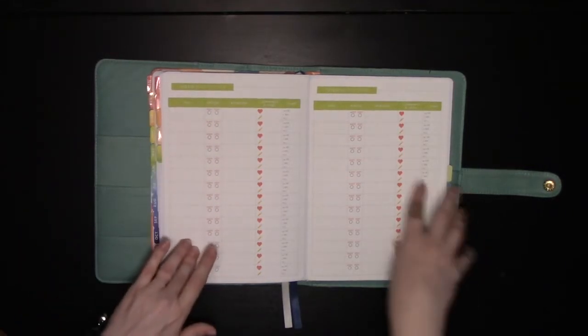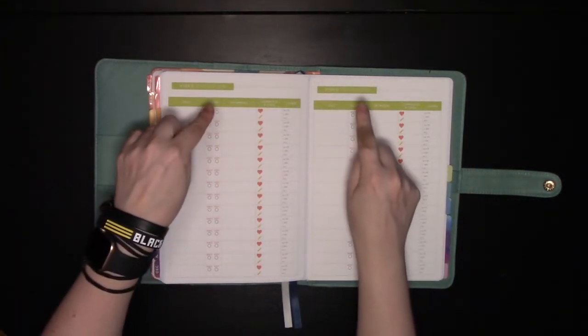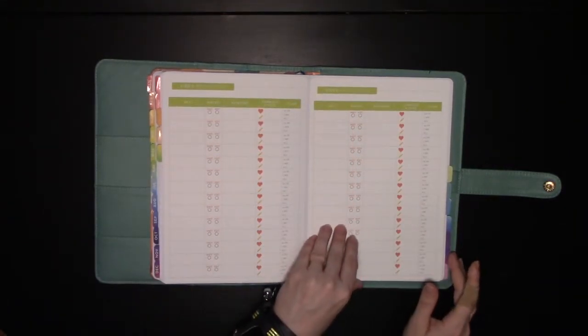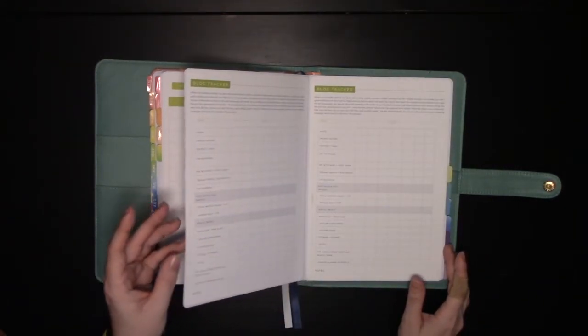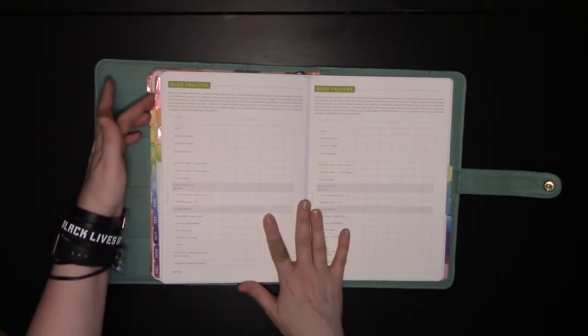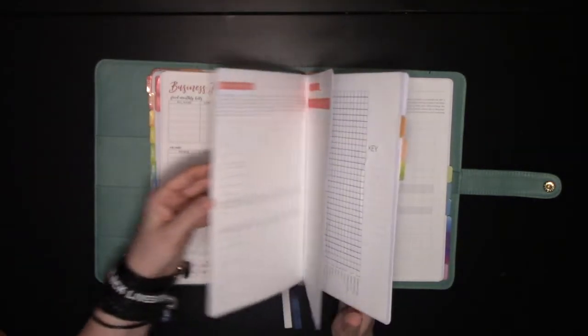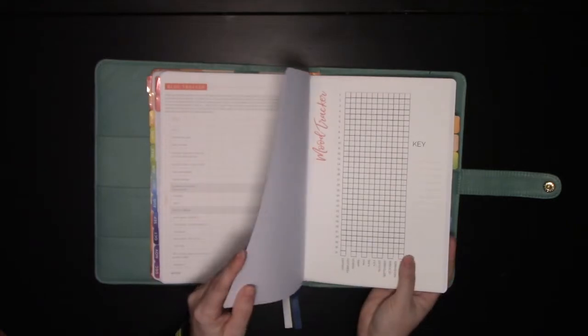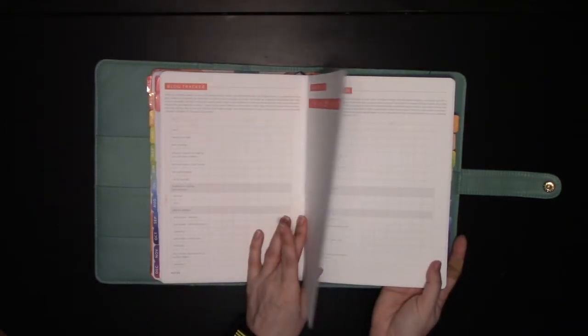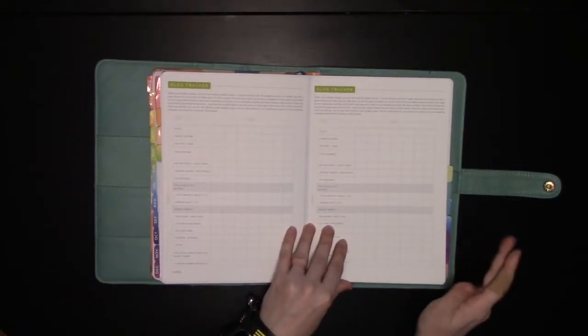Again, brainstorm it out. And then I can keep track of when I posted it, what I shot, what I edited, and how I did on those. This is how the blog tracker that I messed up back here should be posted. Same layout.